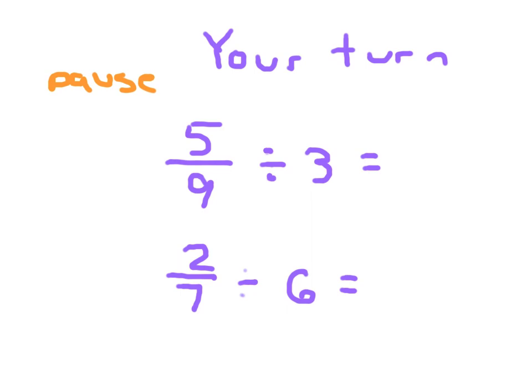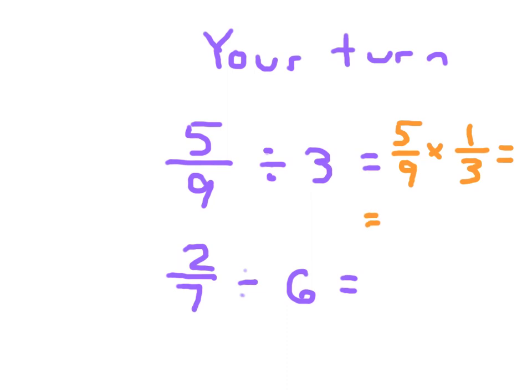Okay, for that first problem, you rewrite it as a multiplication problem as 5 ninths times 1 third. Multiplying those numerators, you get 5, and in the denominators, you get 27. So 5 ninths divided by 3 is equal to 5 twenty-sevenths.